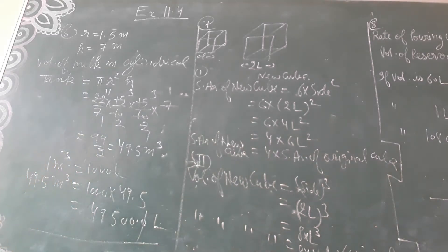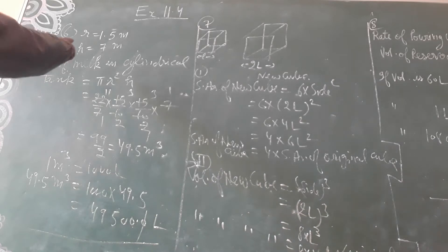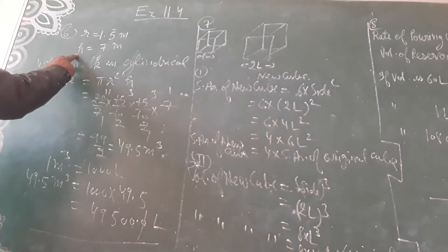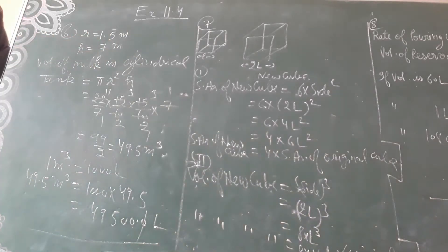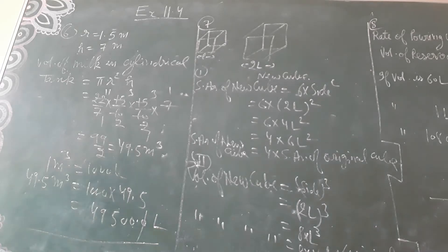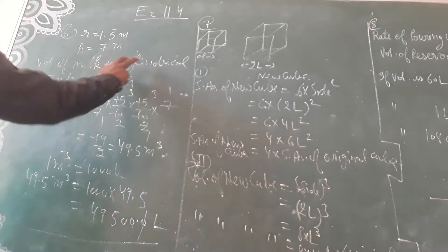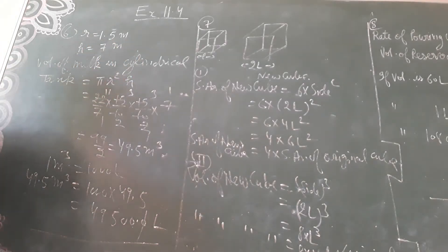Exercise 11.4, Question number 6. A milk tank is in the form of a cylinder whose radius is 1.5 meters and length (height) is 7 meters. Find the volume of milk in the cylindrical tank in liters. Volume formula: pi r squared h.